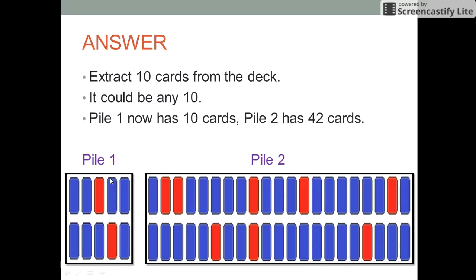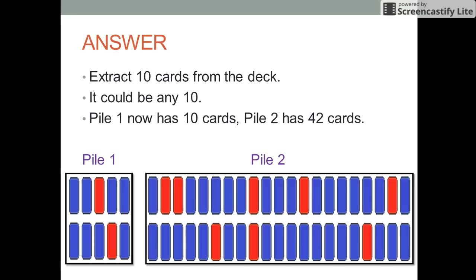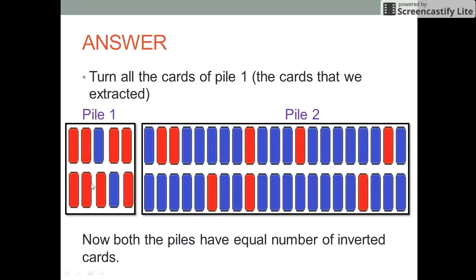So Mr. B could possibly flip all the cards of pile 1, that is the cards that he extracted. So in this way both the piles would have equal number of inverted cards. As we assume that pile 1 had two inverted cards initially, if we invert all the cards of this pile, these two cards would be face down cards and the rest 8 cards would become face up cards, so that the number of inverted cards in both the piles become equal.